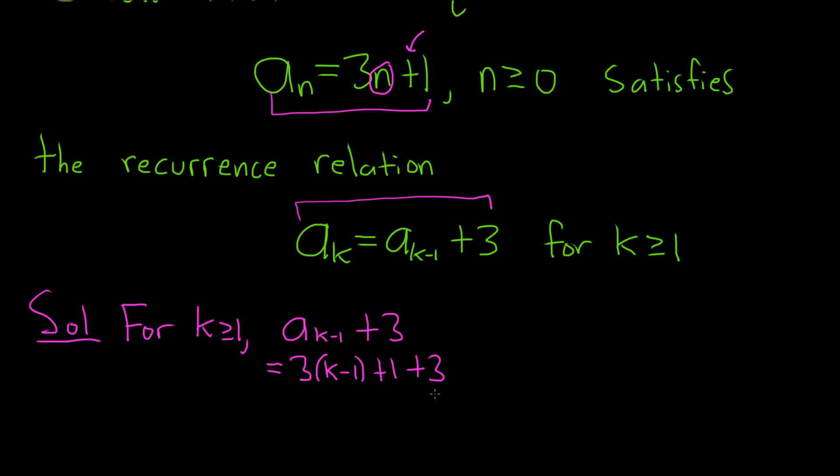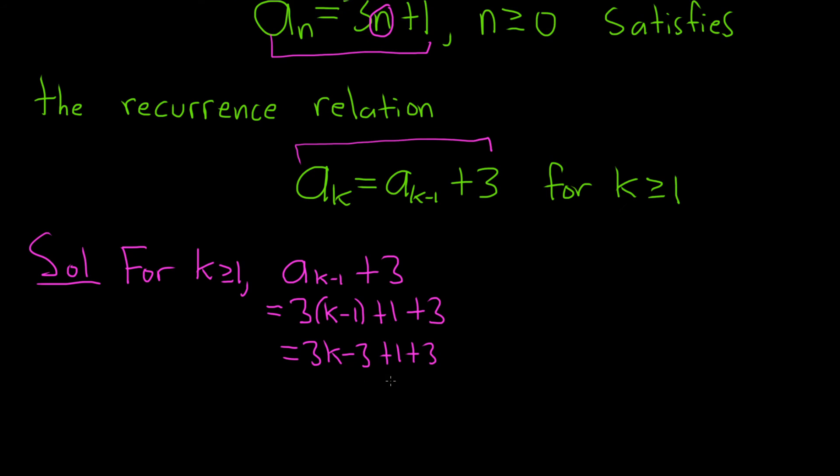Let's see what happens. So this is equal to $3k - 3 + 1 + 3$. And then it looks like the 3s cancel. So we end up with $3k + 1$.